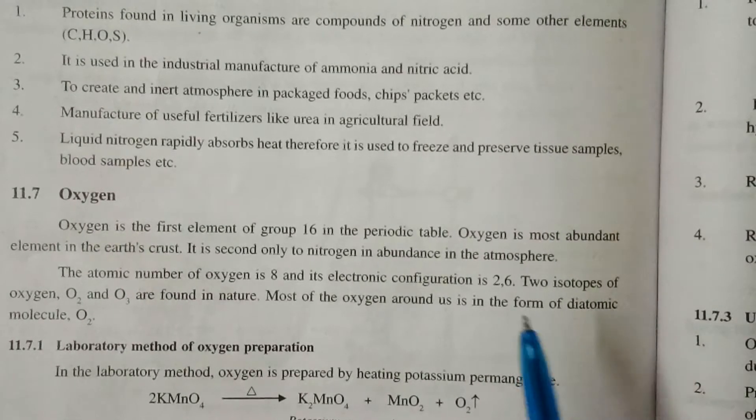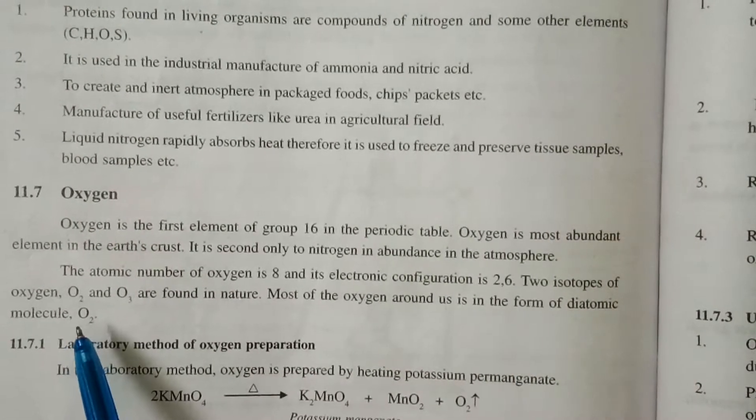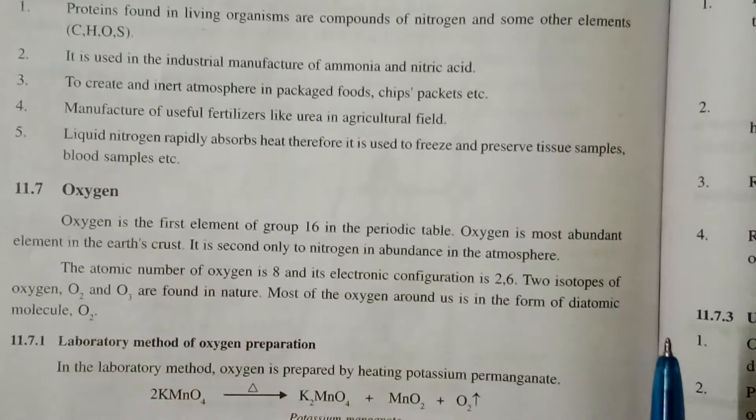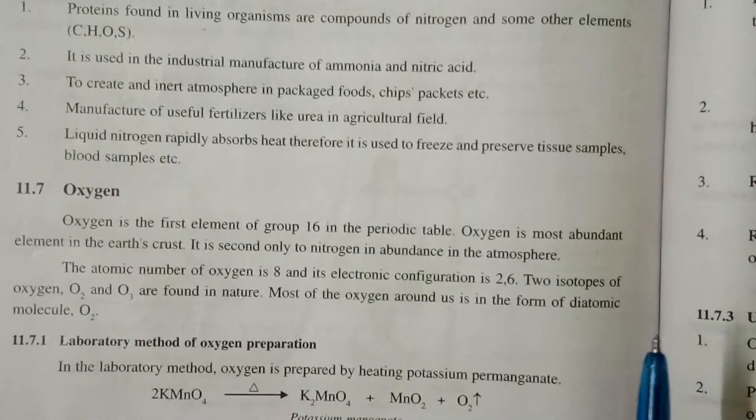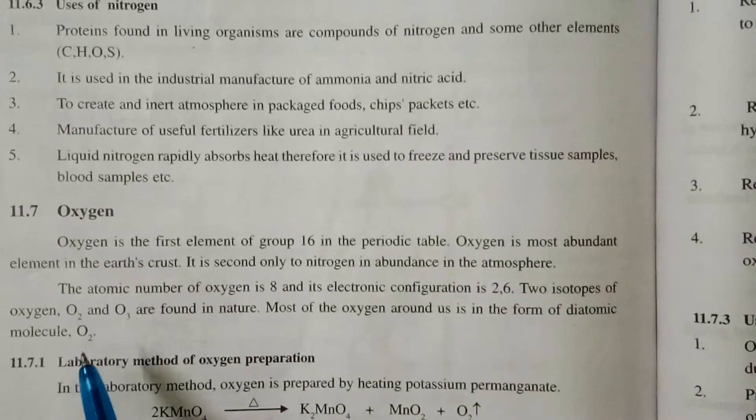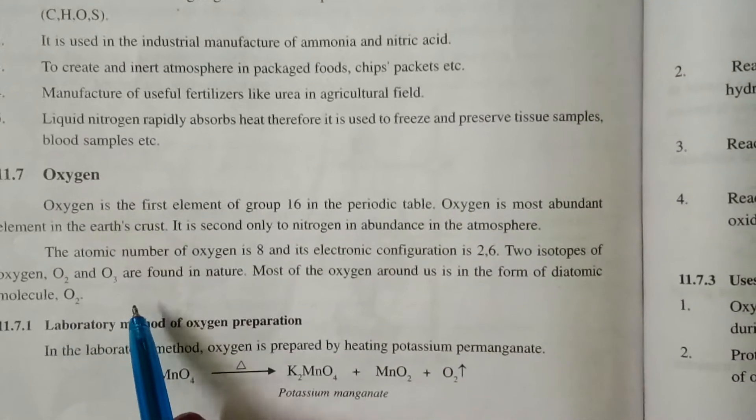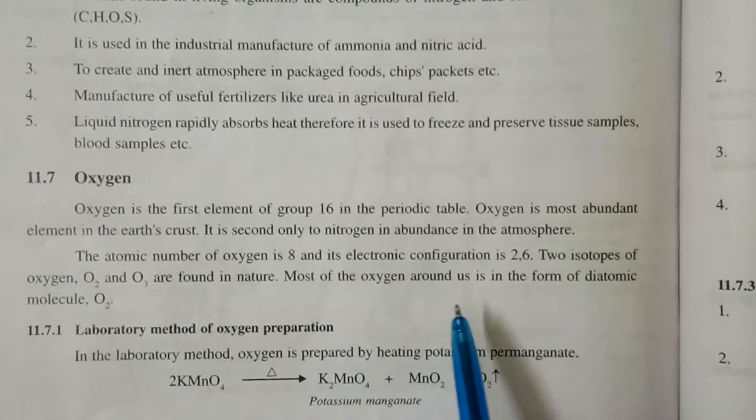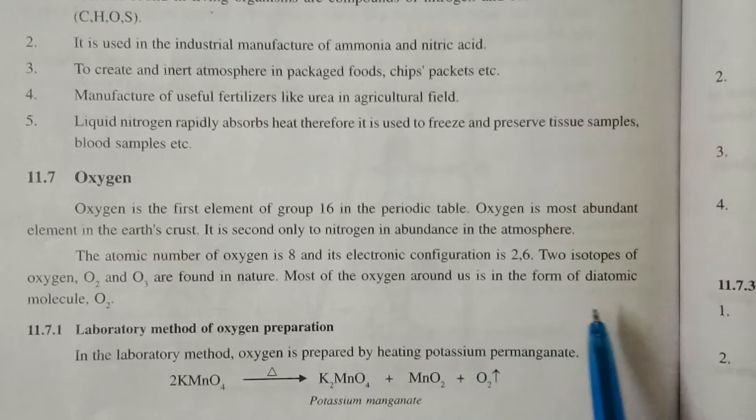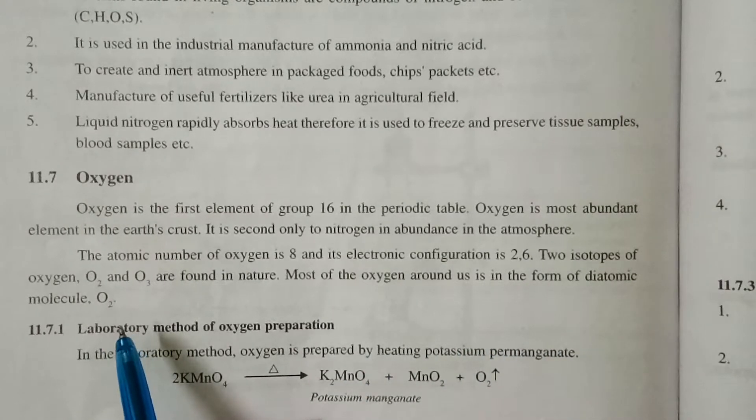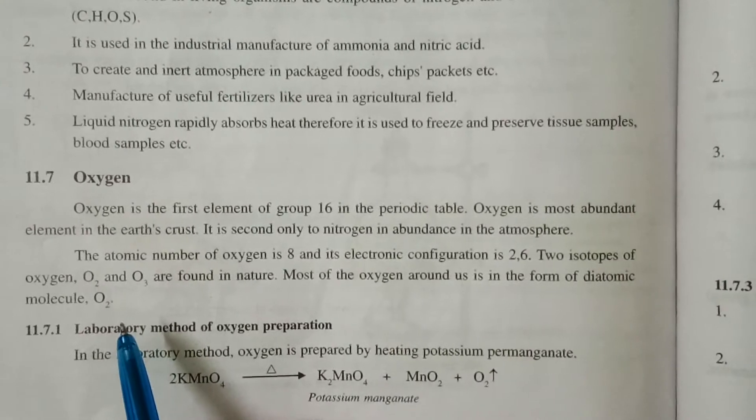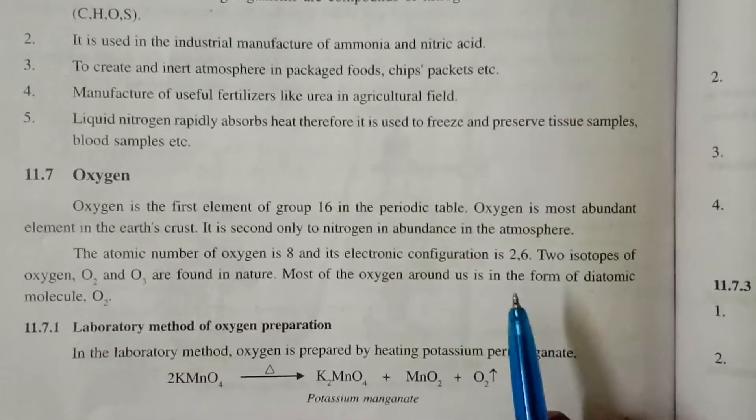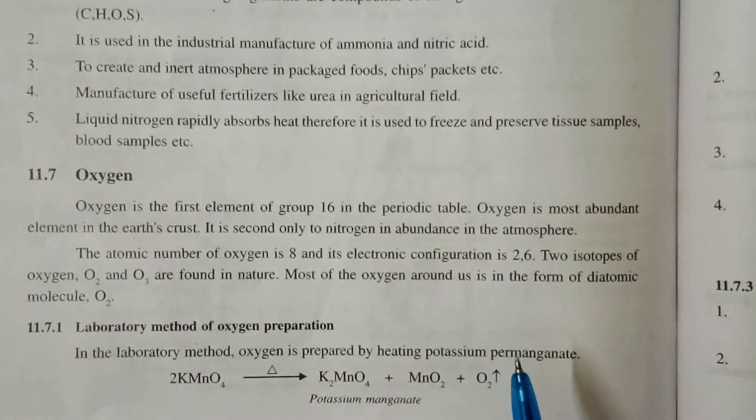Two isotopes of oxygen, O2 and O3 are found in nature. Most of the oxygen around us is in the form of diatomic molecule. Diatomic molecule means a molecule has 2 atoms. So oxygen is also a diatomic molecule.